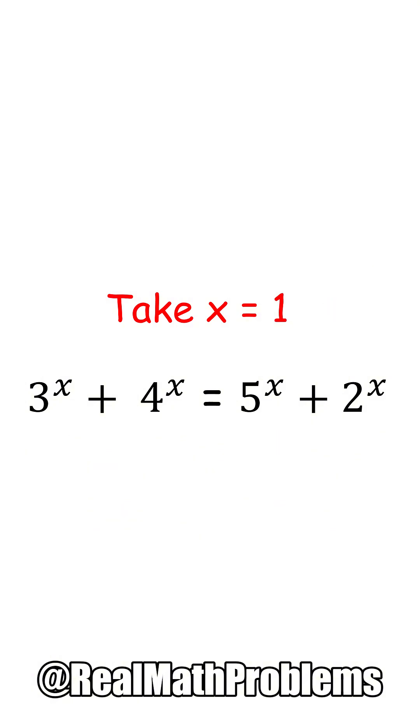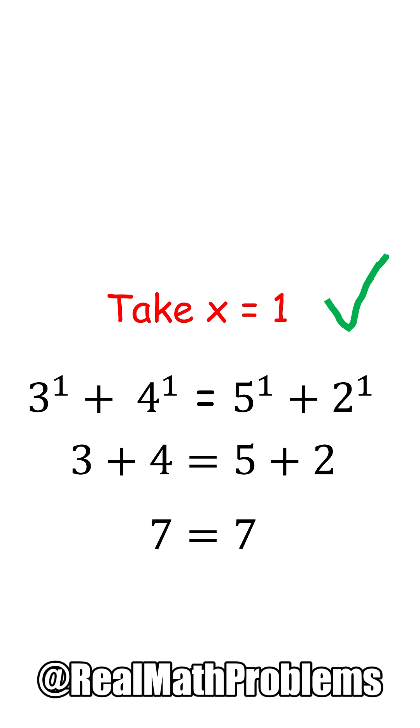Now let's take x equals 1. We have each number power to 1, and it will just be equal to themselves. 3 plus 4 equals 5 plus 2, and it's correctly true because 7 will always be 7.